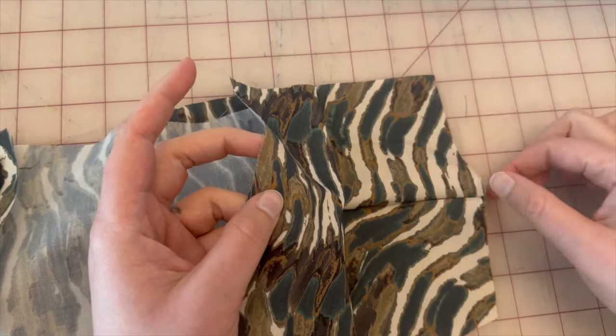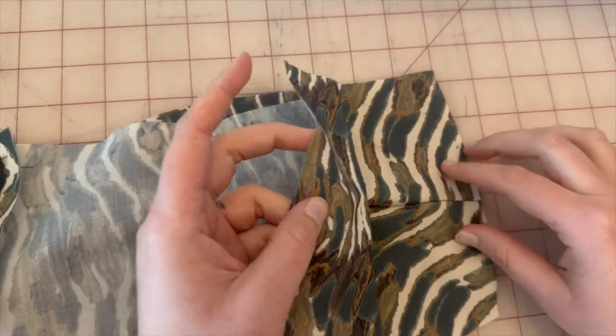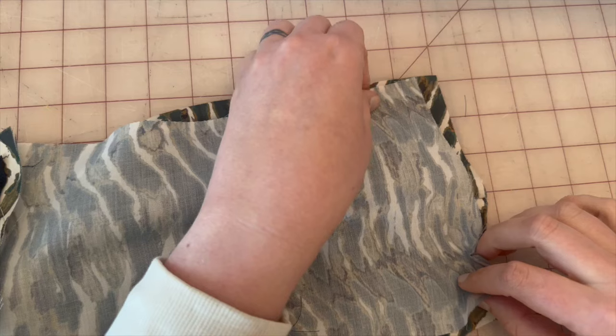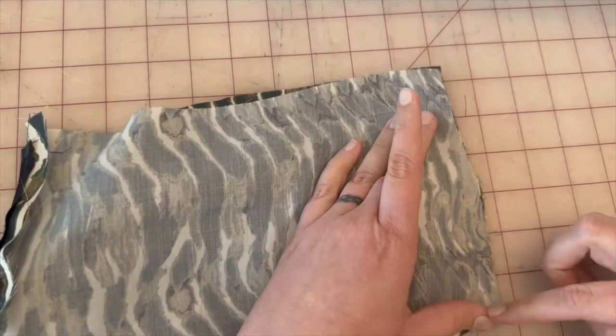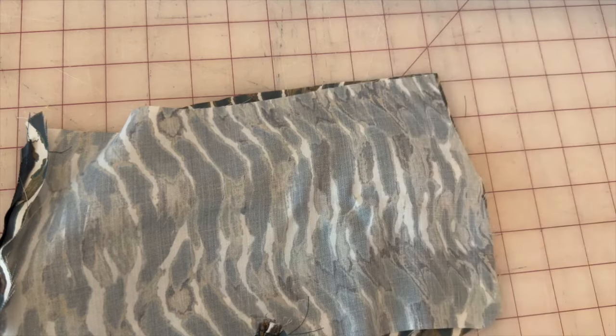So we're going to open up that side we just did, making sure the seam allowance is open. And then we're going to connect the side seams. So we're going to take the back piece and connect the side seams, and we're going to stitch 5/8ths of an inch down.